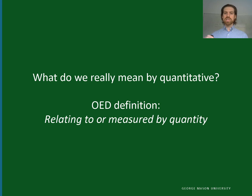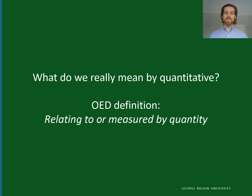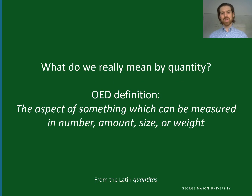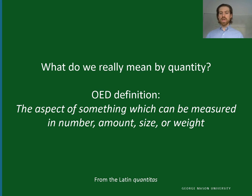So what do we actually mean by quantitative? The Oxford English Dictionary definition is basically that it relates to or is measured by quantity. So what do we mean by quantity? That's the aspect of something which can be measured — so a number, an amount, a size, or a weight. That is pretty useful because it provides us with an understanding of what we mean specifically here. The word comes from the Latin quantitas, which is where it's developed from.